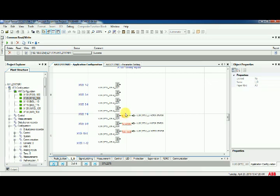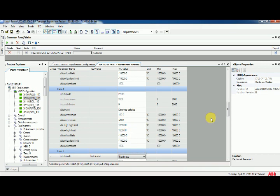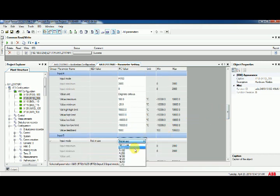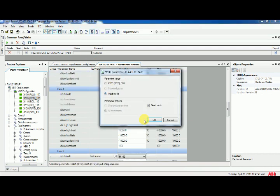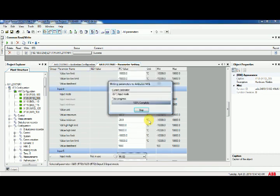For better understanding, I have taken the relay in work online. You can notice for winding U, temperature is not showing. I'm going to check it in the parameter. I noticed input 5 is off, so it is not showing. I enabled it and wrote it to the relay.